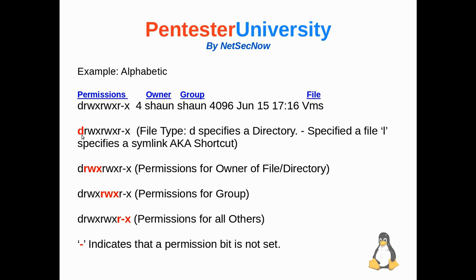The very first letter, denoted here in red to the left, is the file type. A 'd' specifies a directory. If this was just a regular dash, that specifies a regular file — like a text file, a JPEG, or something like that. And if you had a lowercase 'l', that specifies a symlink, otherwise known as a shortcut — similar to creating a shortcut on the desktop in Windows, which is just a link to the original file location.